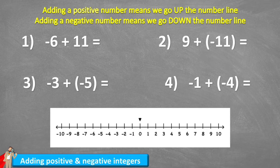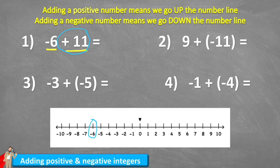Let's have a look at what that looks like with example one. Example one says negative six plus 11. The first thing we're going to do is mark negative six on our number line — I can see it just here, so that's going to be our starting position. And now I'm adding a positive 11, so if I have negative six and I add a positive to it, I'm going to end up coming up my number line. Let's make our 11 jumps.